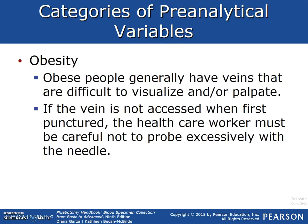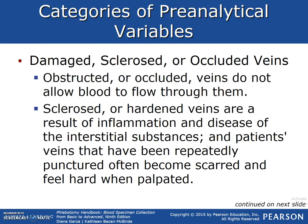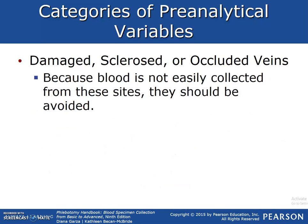Obesity: obese people generally have veins that are difficult to visualize or palpate, and the vein may not be accessed when first punctured. The healthcare worker must be careful not to probe excessively with the needle. Damaged, sclerotic, or occluded veins: obstructed or occluded veins do not allow blood to flow through them. Sclerosis or hardened veins result from inflammation or disease. In patients whose veins have been repeatedly punctured, they become scarred and feel hard and cord-like when palpated. Because blood is not easily collected from these sites, they should be avoided.